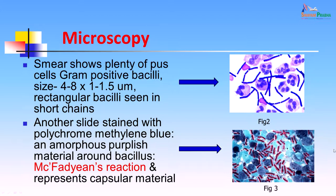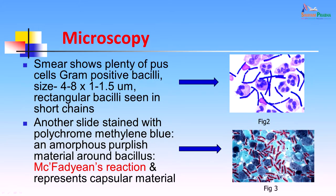Another slide was stained with polychrome methylene blue. It showed an amorphous purplish material around the bacteria. This is known as the McFadyean reaction and represents the capsular material around the bacteria. The bacillus has a polymer of D-glutamic acid capsule around the entire chain. This can be demonstrated by India ink and fluorescent labeled antibody. The India ink preparation shows the clear capsule around the full chain of the bacteria, and the fluorescent labeled antibody stain confirms the organism is Bacillus anthracis.